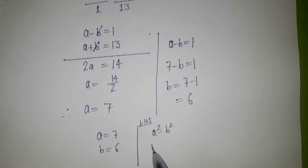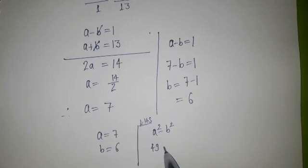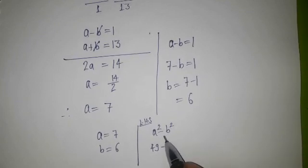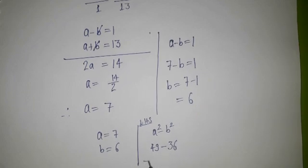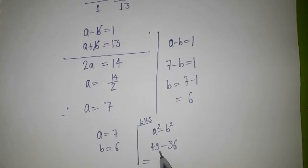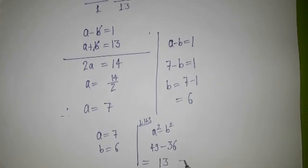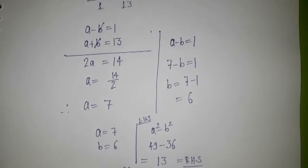...49 will be the outcome, and I'm putting b as 6, so 36. So 49 - 36, it is coming as 13, that is our RHS.